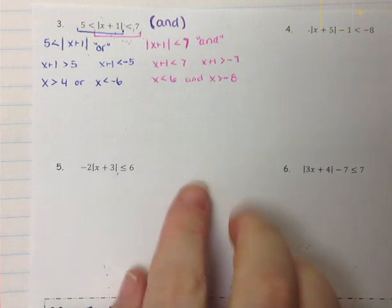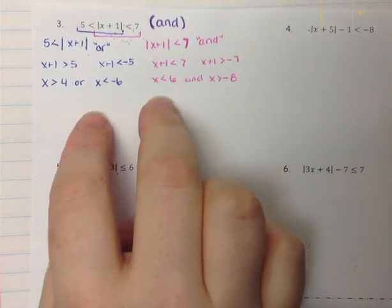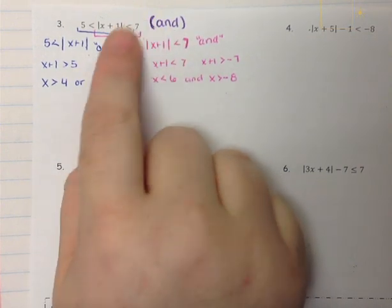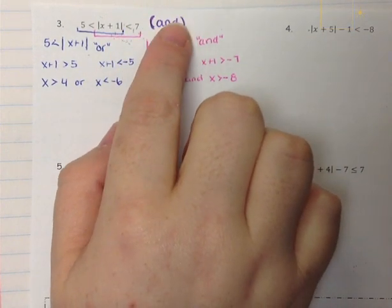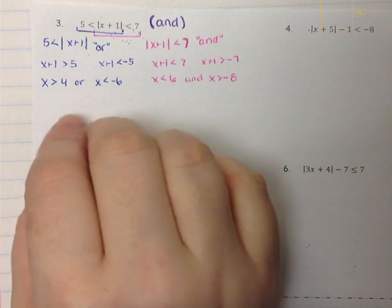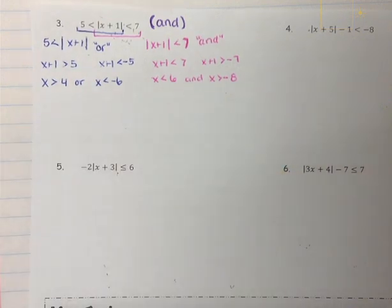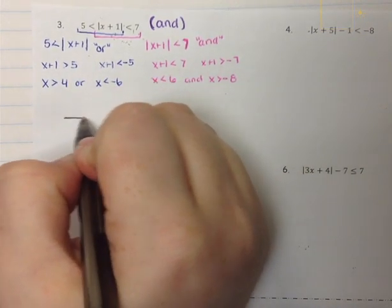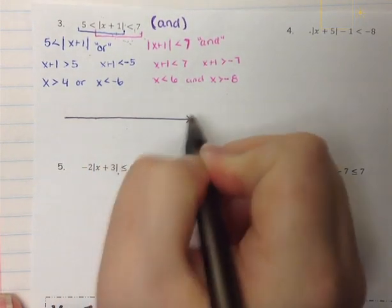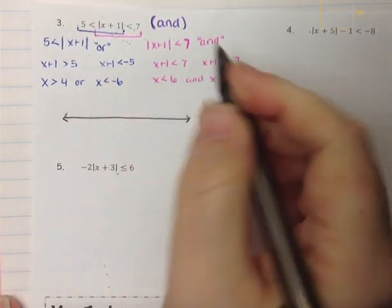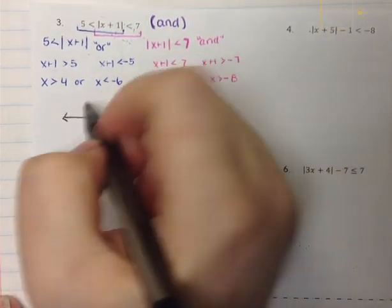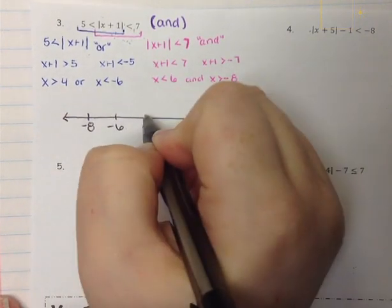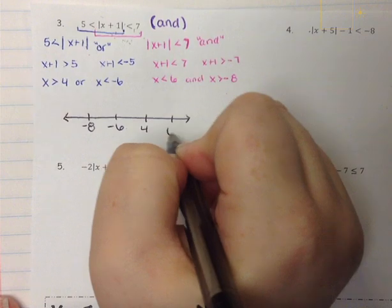Solving the pink: x is less than 6, and x is greater than negative 8. Here is where it gets a little complicated when we have to draw our number line. Because the overall problem is an and, we cannot shade until we know exactly what to shade. On our number line, we have four different numbers: negative 8, negative 6, 4, and 6.